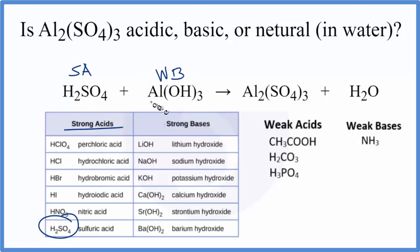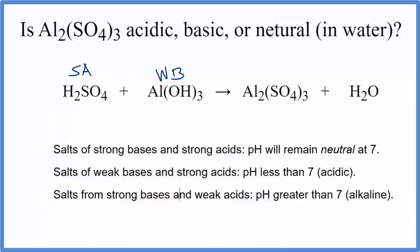So now we know the strengths, we can use the rules. So looking at our rules, we have a strong acid, here's a strong acid, and a weak base. So strong acid, strong base, strong acid, weak base.